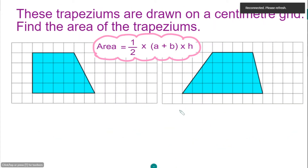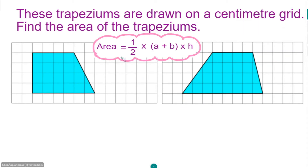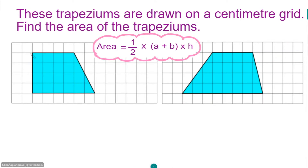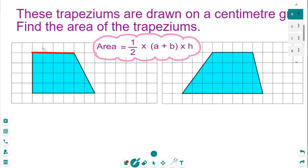Now let's move on to another question. We have a trapezium on this centimetre grid and we need to work out the area. Beginning with the first trapezium, the top parallel side counts 1, 2, 3, 4 — so it's 4 cm. The bottom parallel side counts 1, 2, 3, 4, 5, 6 — so it's 6 cm.